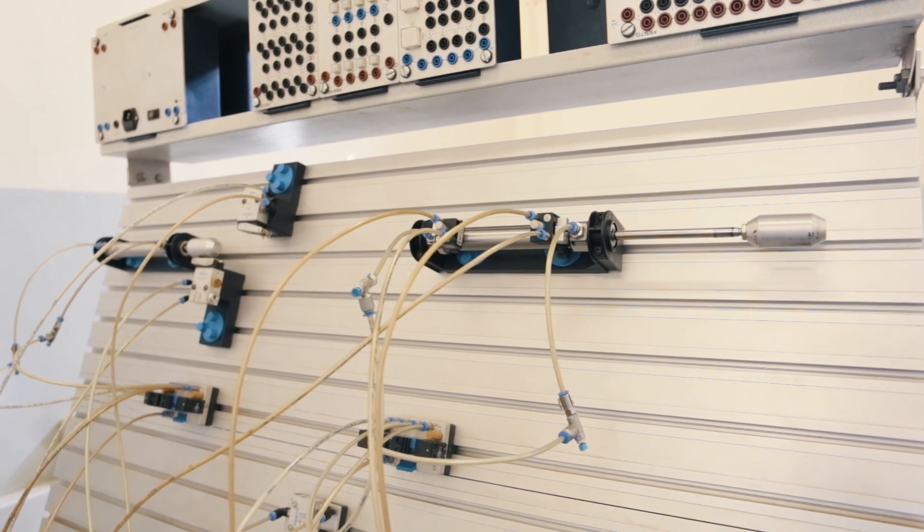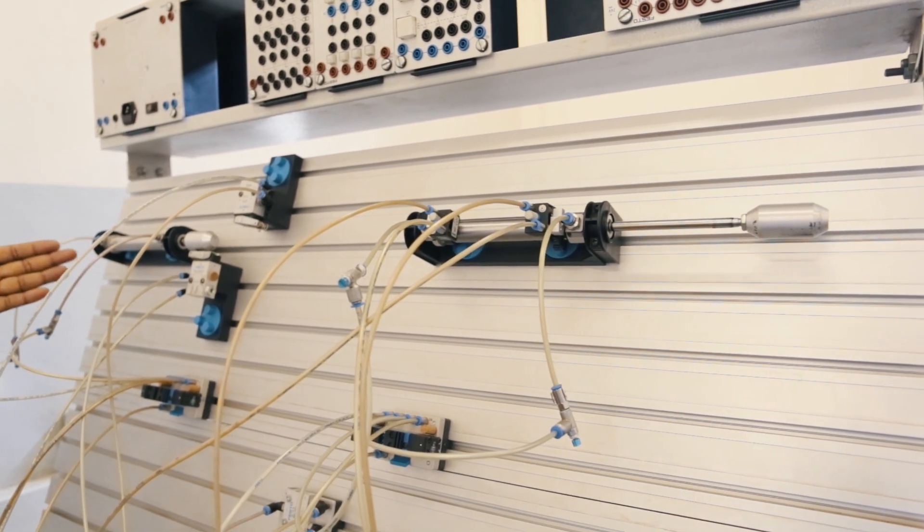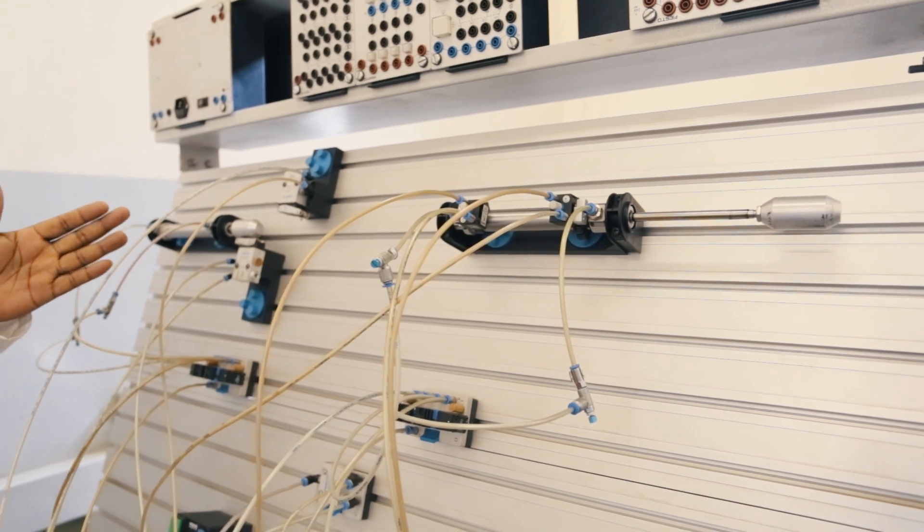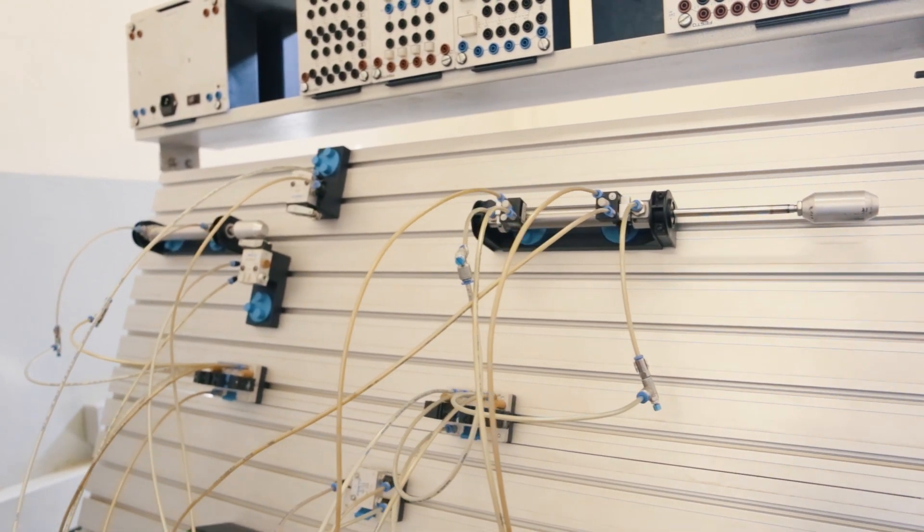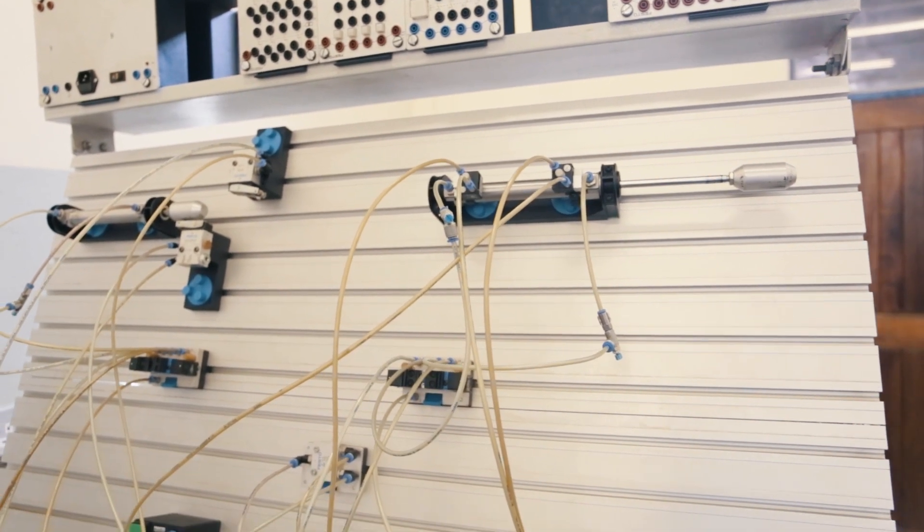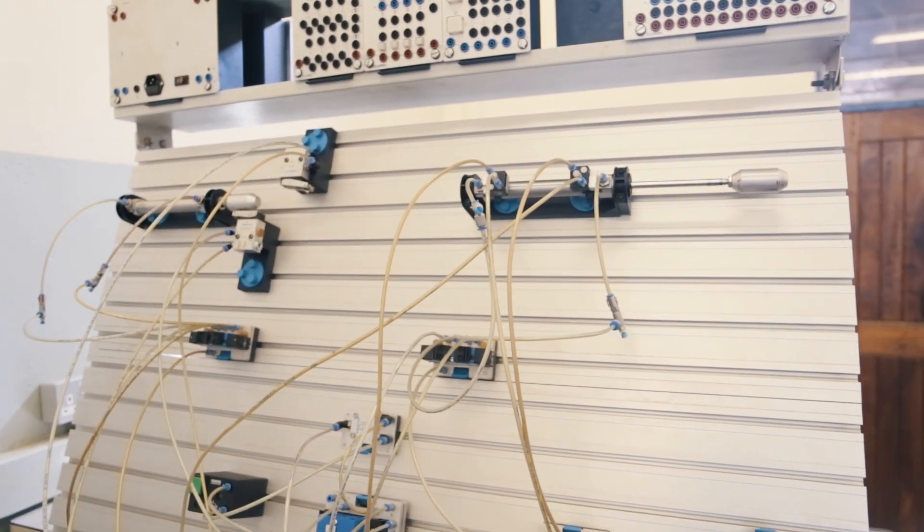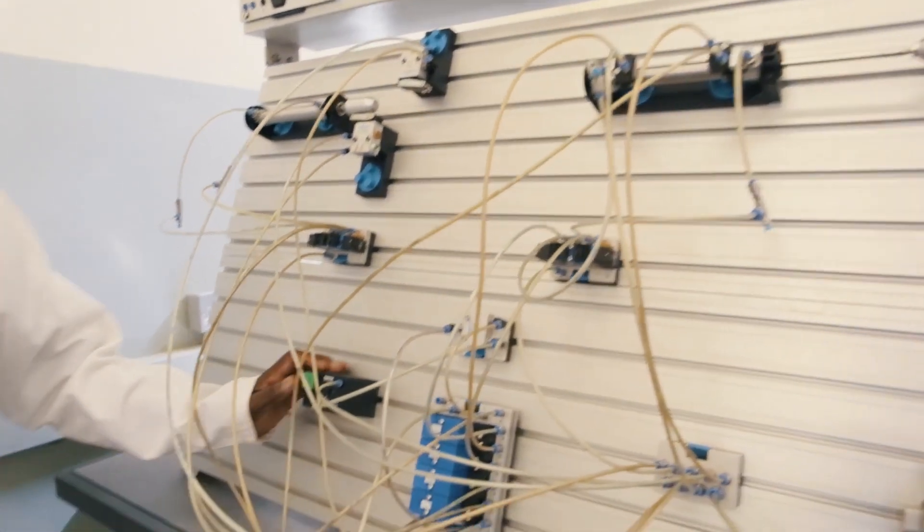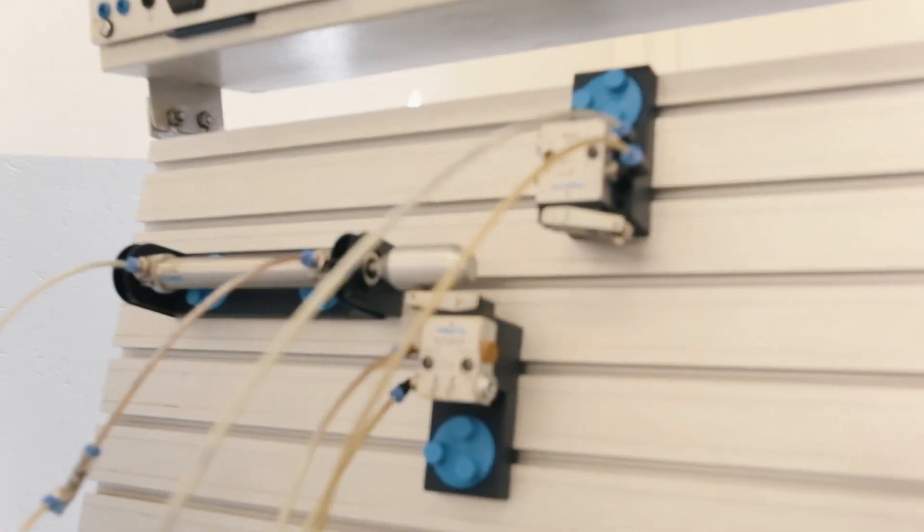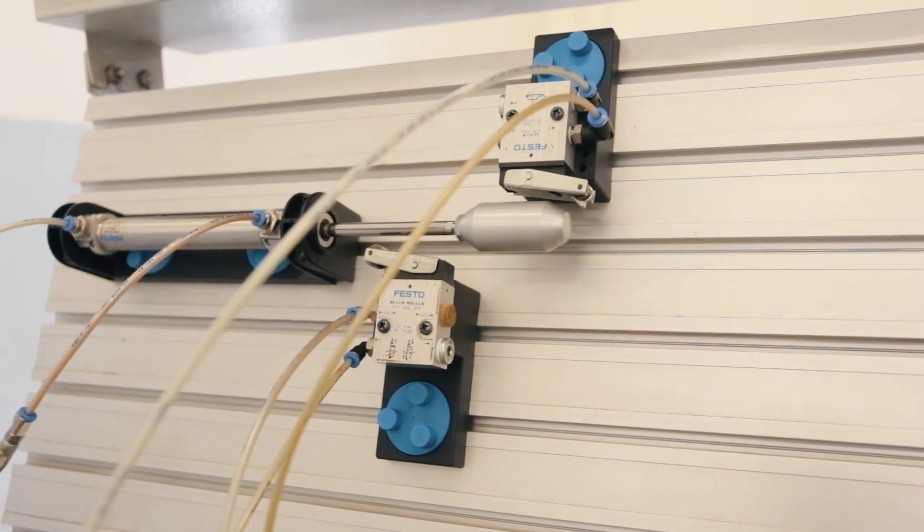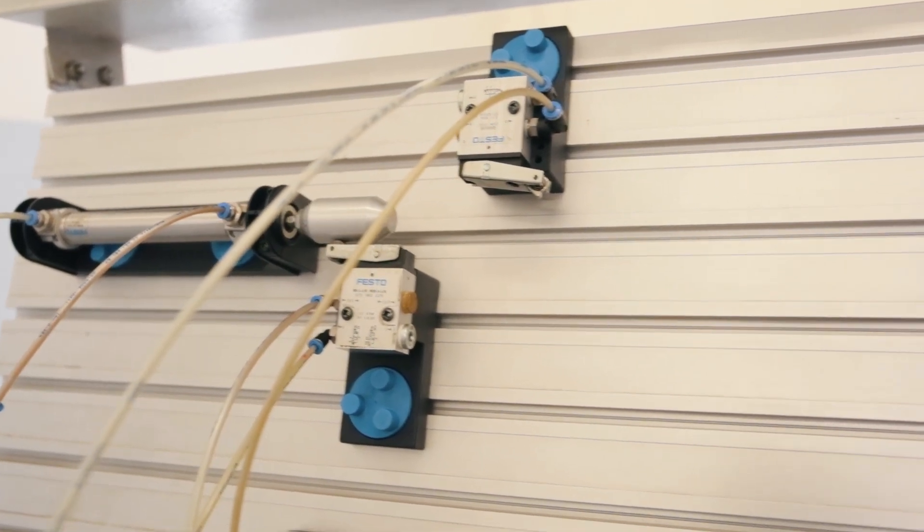What is happening is a sequence because cylinder number one first extends, actuates on the limit switch, then comes back on the other limit switch. That's when cylinder number two goes in. Then after that, the memory will be resetting so that it goes back to its original position.